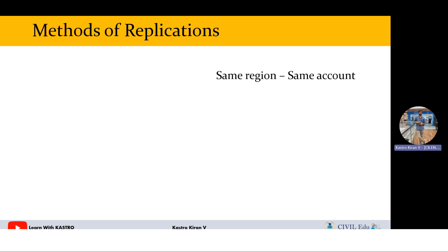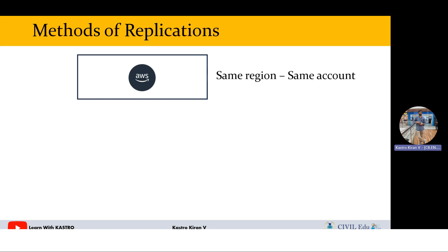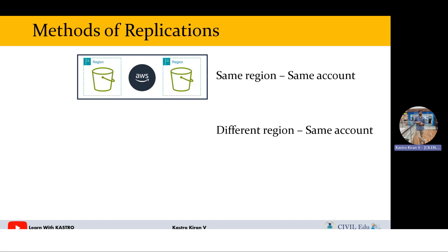We can do replication in three different ways. The first method is same region and same account — both buckets are in the same AWS region and the same AWS account. For example, if bucket one is in the Mumbai region, bucket two should also be in the Mumbai region, and both belong to the same account.